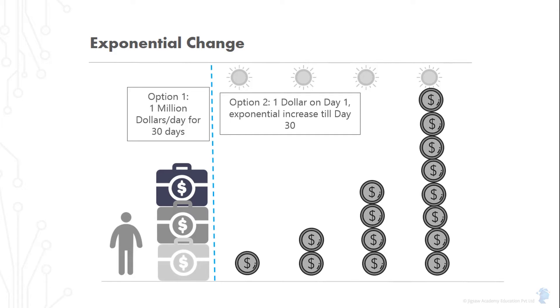Okay, so that's a trick question, right? Thirty million dollars, the total that you would make if you took option one, seems like a lot of money. How long would the doubling process of option two take to catch up? Will it ever?